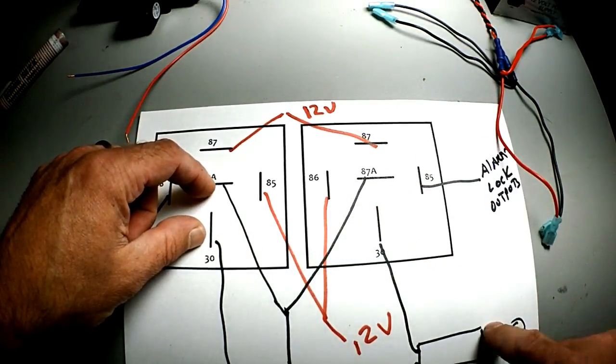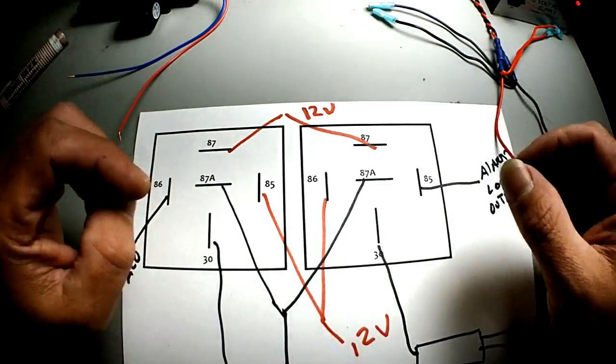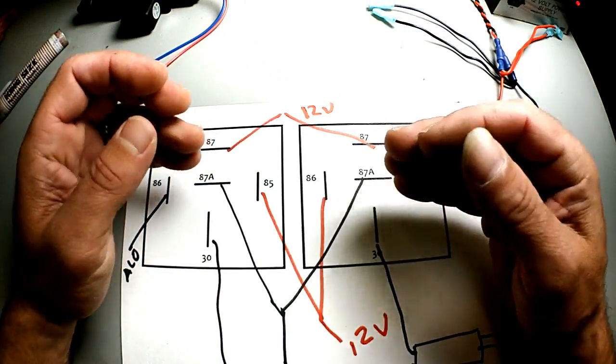Which will throw 12 volts to the actuator on the side while this rests at ground. As soon as that pulse is done, this will go back to resting both at ground.